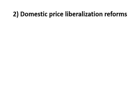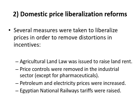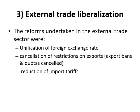The second component of ERSAP was domestic price liberalization reforms. Several measures were taken to liberalize prices in order to remove distortions in incentives, such as: the agricultural land law was issued to raise land rent; price controls were removed in the industrial sector; petroleum and electricity prices were increased; and Egyptian National Railways tariffs were raised.